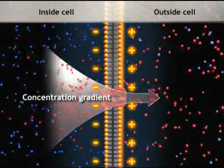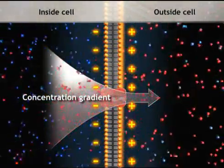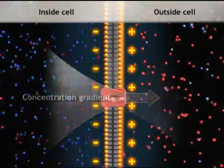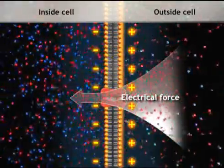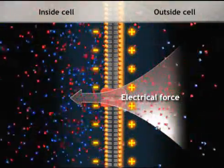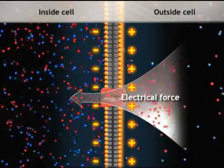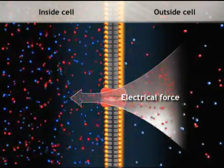At first, diffusion is the dominant force moving the potassium ions across the membrane. But as the inside fluid becomes more negative, the negative electrical force pulls the positively charged potassium ions back through the potassium channel into the cell.